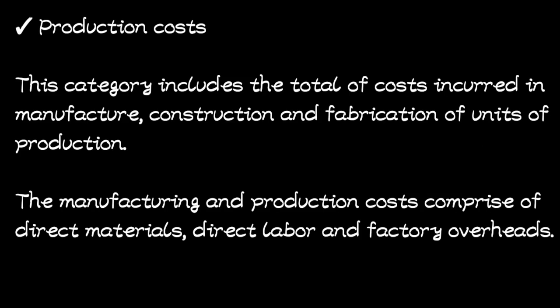Starting with production costs: this category includes the total costs incurred in the manufacture, construction, and fabrication of units or production. All costs involved in the production process fall under production costs. The manufacturing and production costs comprise direct materials costs, direct labor costs, and overhead costs, specifically factory overheads.